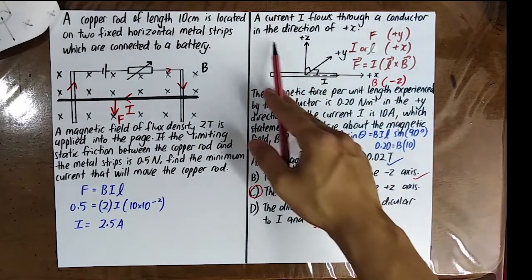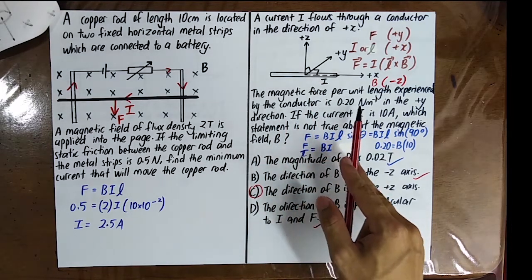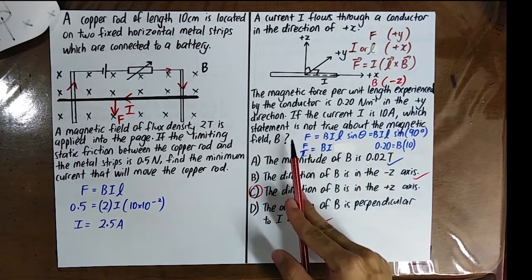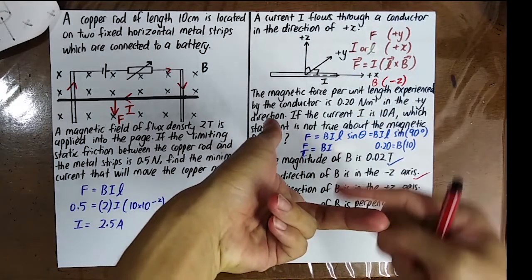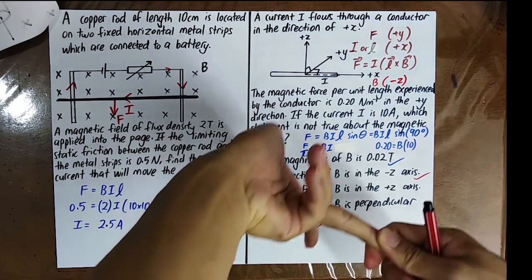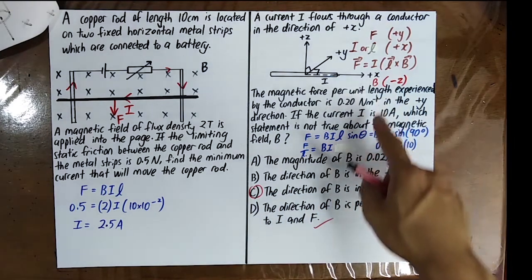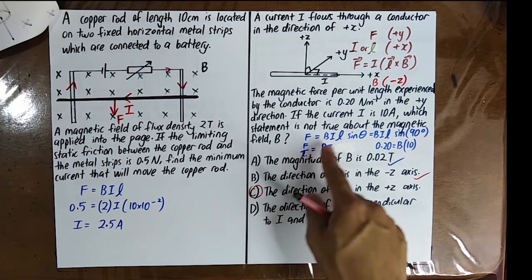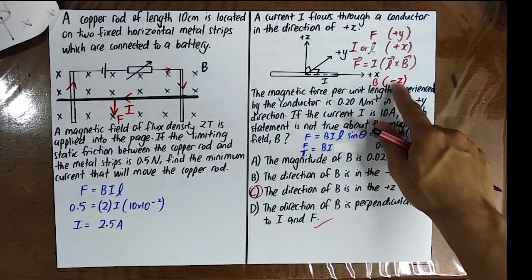Example: A current I flows through a conductor in the positive x-direction. The magnetic force per unit length is 0.2 N/m in the positive y-direction, and the current I is 10 A. Using Fleming's Left Hand Rule, F is in the positive y-direction and I (or L) is in the positive x-direction, so B must be in the negative z-direction. Using F = BIL, rearranged as F/L = BI, you can find the magnitude of B. The direction of B is perpendicular to both I and F.